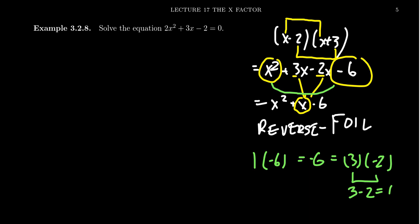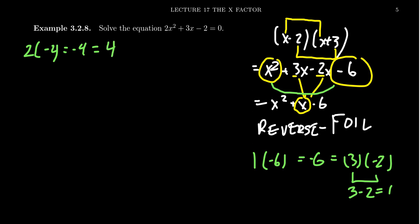So when it comes to this reverse FOIL process, what we want to do is take the product of the leading coefficient and the constant term. In this situation, this would give us two times negative two equals negative four. We then have to look for factors of negative four that add up to be the middle number, which is three. This takes a little bit of experimentation, but notice that four times negative one multiplies to give you negative four, but it adds together to give us three.